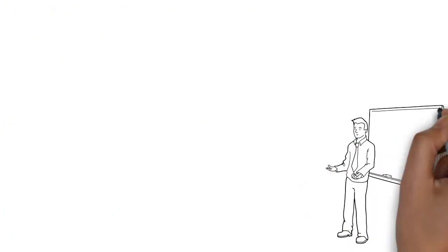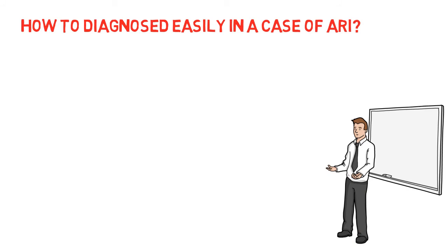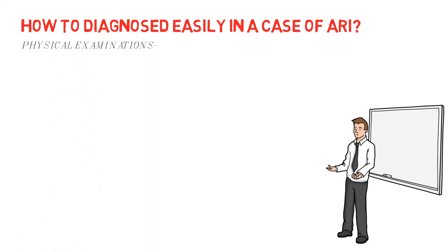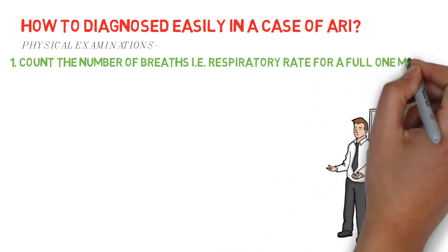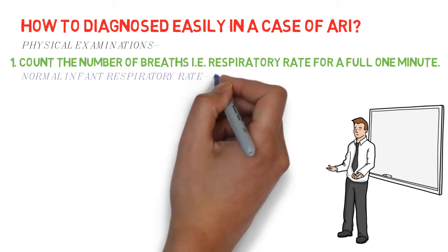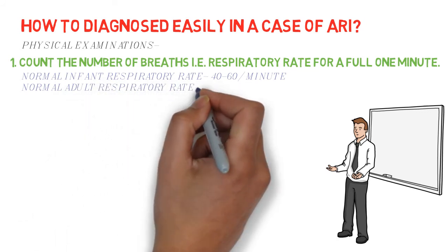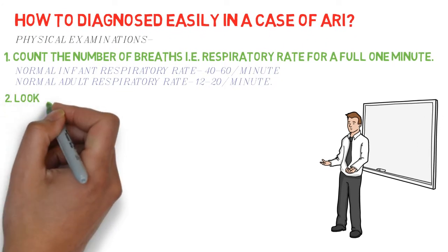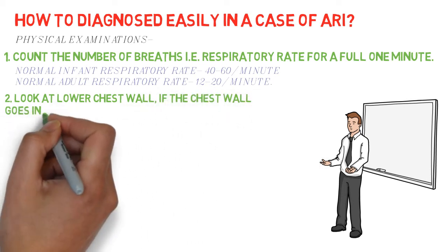Now we will see how to diagnose easily in a case of acute respiratory infection. There are some physical examinations which help for early diagnosis. These are: number one, count the number of breaths, that is respiratory rate, for a full one minute. Normal infant respiratory rate is 40 to 60 per minute, and normal adult respiratory rate is 12 to 20 per minute. If more than that, then it will be significant.